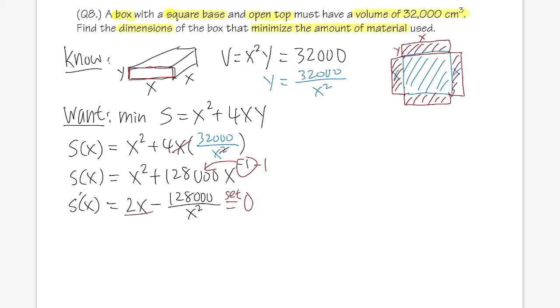Now we are going to set this to be zero. Perhaps I'm just going to get a common denominator real quick, so I will just multiply x² here and here. We are going to get 2x³ minus 128,000 over x², and this should be equal to zero.